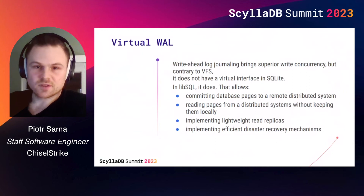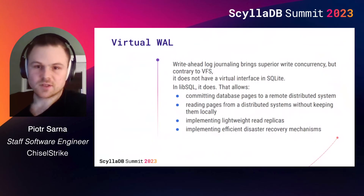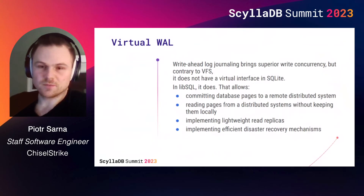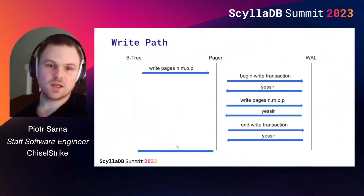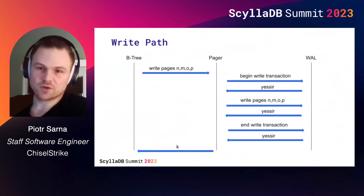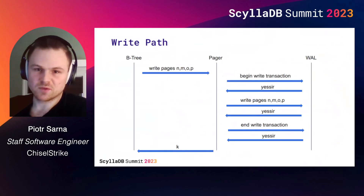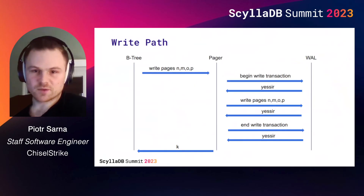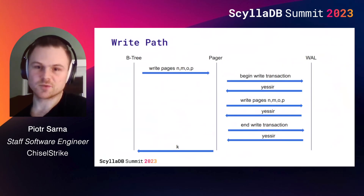One big thing introduced in LibSQL is a virtual write-ahead log. Similarly to how VFS is a virtual interface, we wanted to hook into the WAL journaling mode. The write path in SQLite in WAL mode is quite straightforward — when pages need to be stored within a write transaction, pages are appended to the write-ahead log and then the transaction can be committed or rolled back. With virtual WAL, when pages are appended, we could do virtually anything with them: cache them, replicate them to remote storage, compress, or encrypt. Overwriting the callbacks for starting and ending a write transaction also allows developers to implement their own locking mechanisms, including forms of distributed locks.